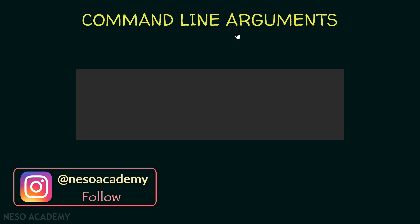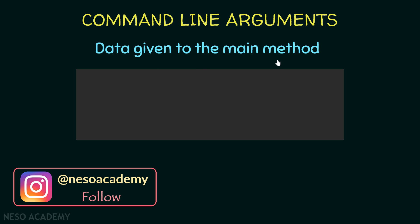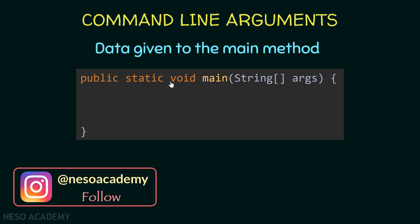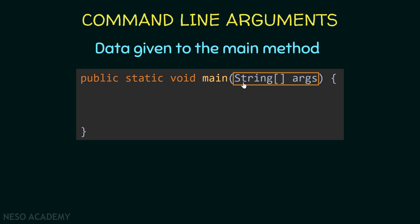Command line arguments are data that is given to the main method. As you know, the main method takes some parameters. You already know what a string is — it is some text put inside double quotes. Think of this parameter as a group of strings, and this group is called args, which is an abbreviation for arguments. We are able to give the main method a group of strings and use them.